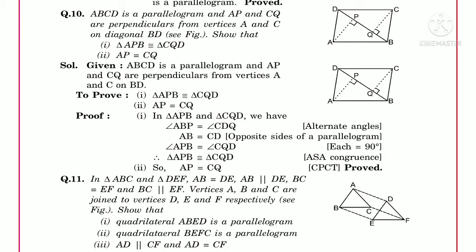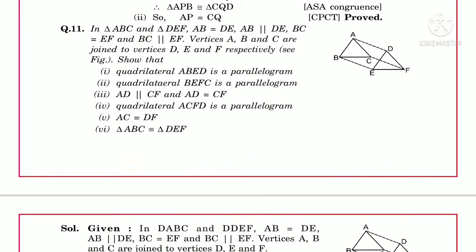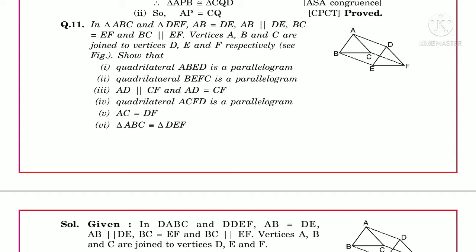Question number 11: In triangles ABC and DEF, AB equals DE and AB is parallel to DE, and BC equals EF and BC is parallel to EF. Vertices A, B, and C are joined to vertices D, E, F respectively. We need to prove six things: (1) quadrilateral ABED is a parallelogram, (2) BEFC is a parallelogram, (3) AD parallel to CF and AD equals CF, (4) ACFD is a parallelogram, (5) AC equals DF, and (6) triangle ABC congruent to triangle DEF.